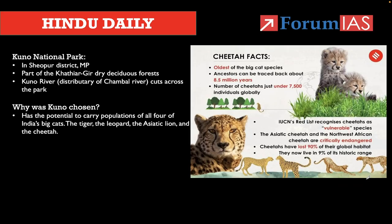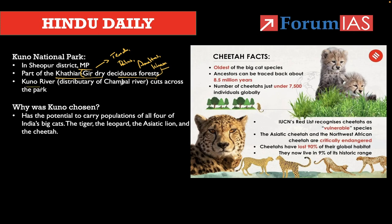Let us discuss briefly about Kuno National Park. Kuno National Park is spread in the Madhya Pradesh state. It is a part of the Kathiawar and Gir dry deciduous forest. Trees in dry deciduous forests include Tendu, Palas, Amaltas, and Khair. The Kuno river, a distributary of Chambal river, flows through the park. Kuno was chosen because it has the capacity to carry all four big cats: tiger, leopard, Asiatic lion, and cheetah.